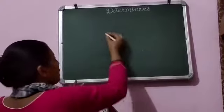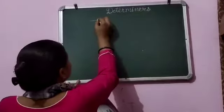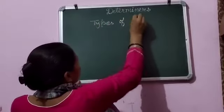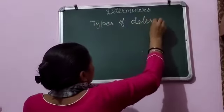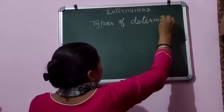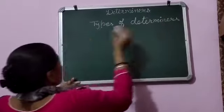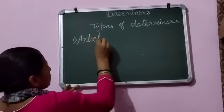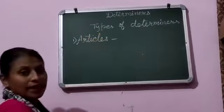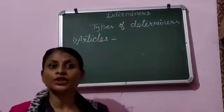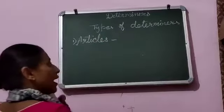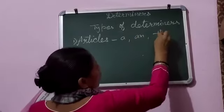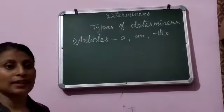Now we will do types of determiners. Types of determiners: first is articles. Articles हमें पता हैं — कौन कौन से articles होते हैं — a, an, and the. These are the articles.